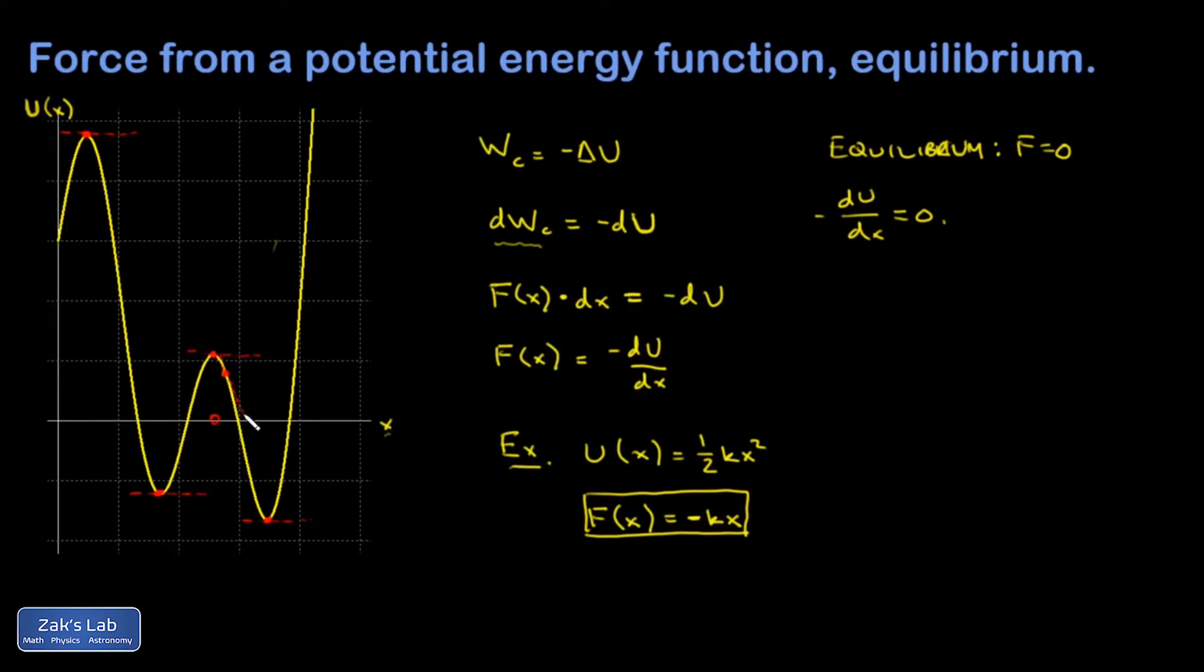Look at the tangent line there - dU/dx is negative, which means F is going to be positive. So a slight displacement from the top of that hill is going to result in a force pointing to the right. By the time my particle is over here, it's experiencing a force pointing away from that equilibrium point, and it's going to run off to some new location.